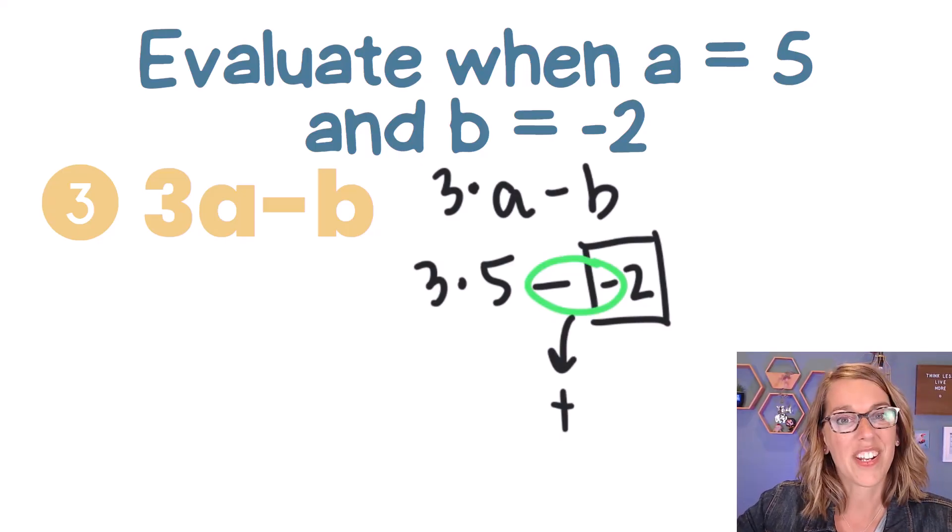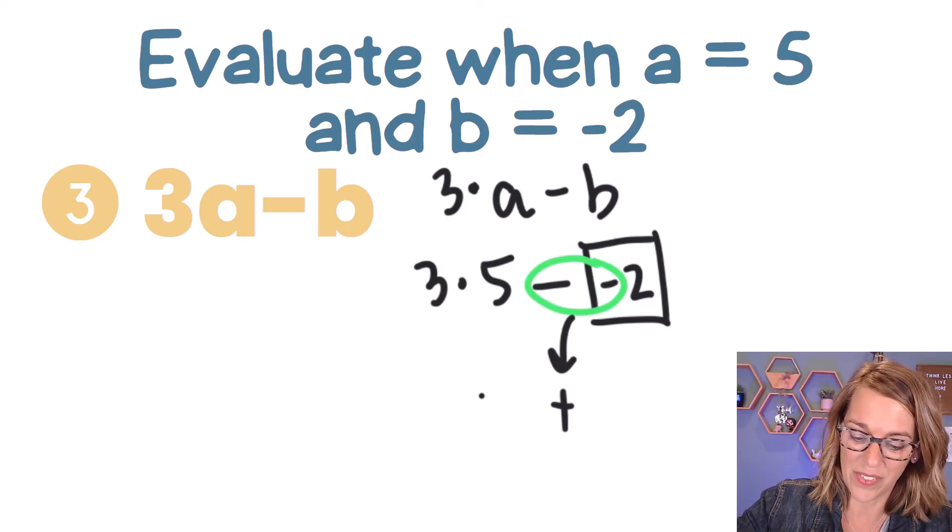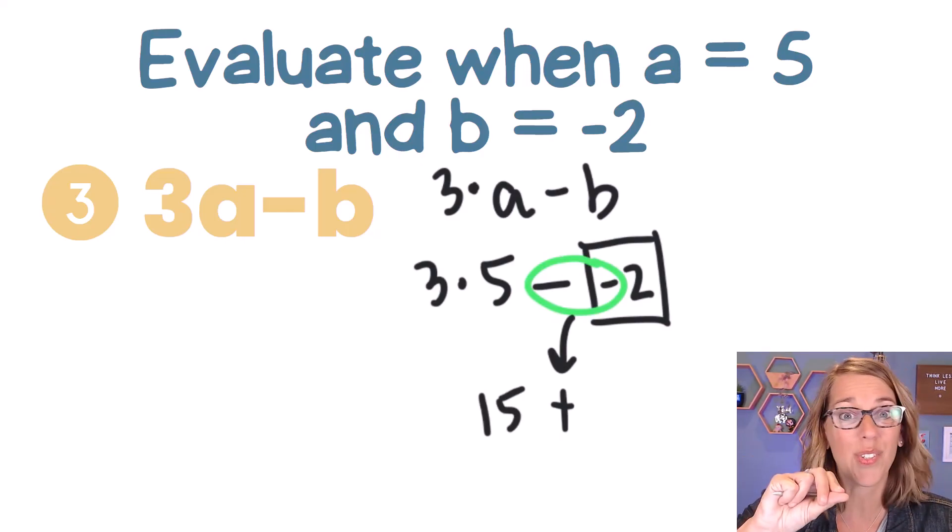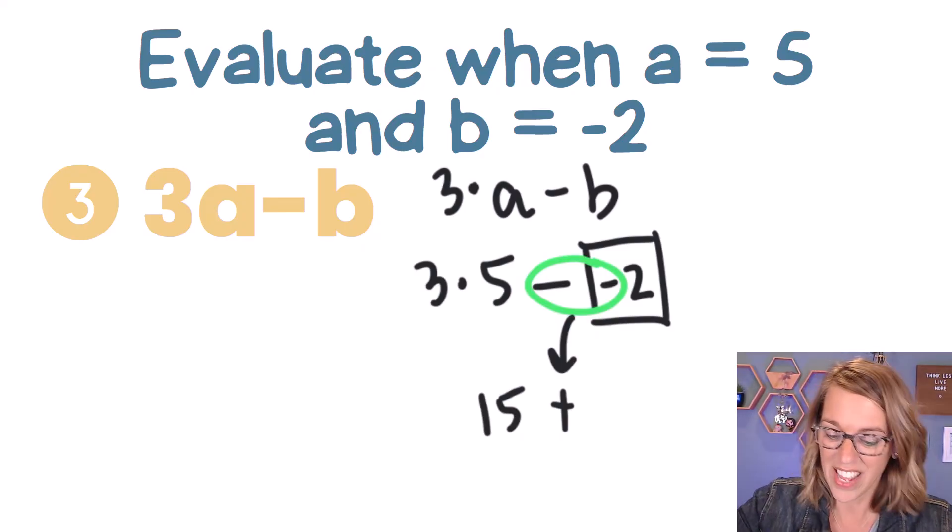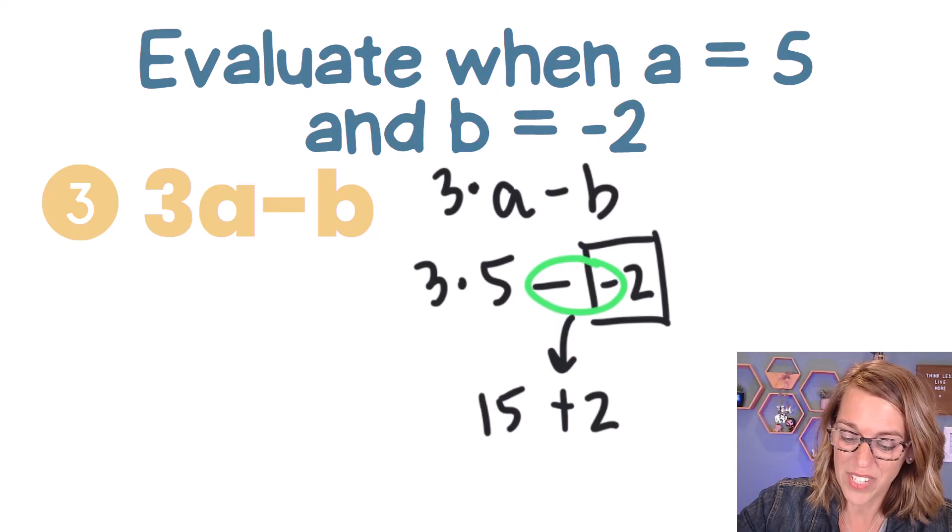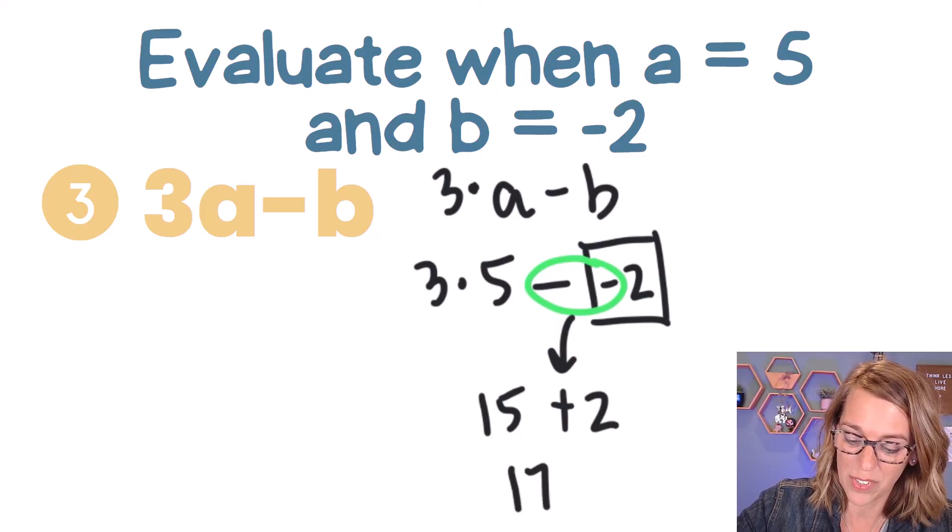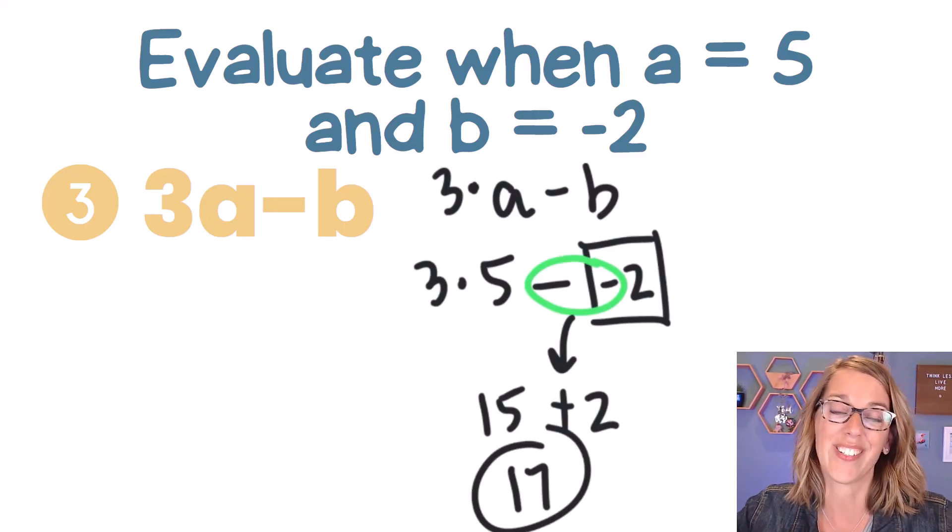Let's do our multiplication. 3 times 5 is 15. I took care of those two negatives and created from the two negatives a positive, and that leaves me with a 2. 15 plus 2 is equal to 17. So that's my value.